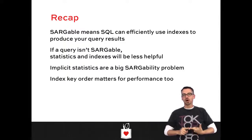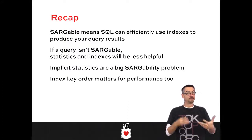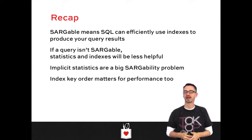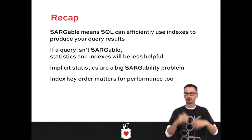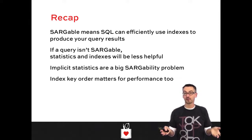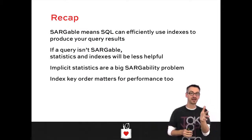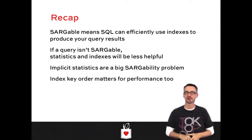To recap: Sargeability means SQL Server can use your search arguments efficiently with indexes. If something's not sargeable, it also can't use statistics correctly, leading to bad estimates for execution plans. Implicit conversions are also a big Sargeability problem — casting varchar as nvarchar or vice versa can cause big surprises in execution plans. Finally, index key order matters a lot for performance and affects statistics — if a field is in your WHERE clause, it needs to be first in the index or you'll end up scanning the whole thing, just like with implicit conversions.